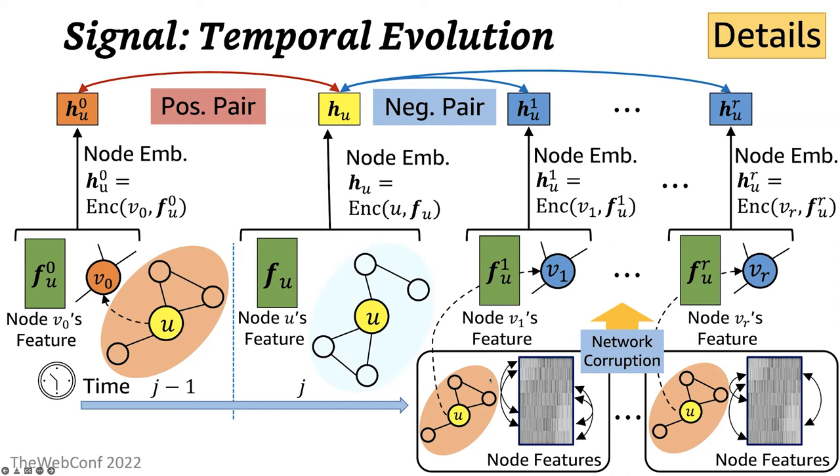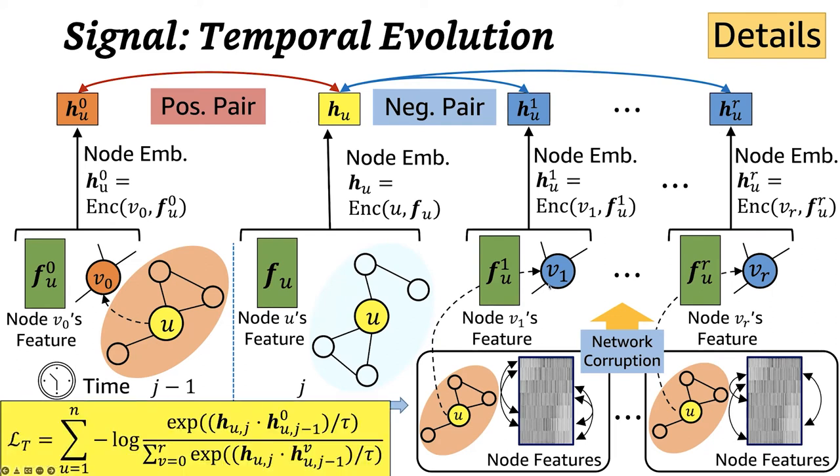Then node embeddings from these corrupted networks, which correspond to the anchor node u, are taken as the negative samples of the anchor node. Again, once we have these positive and negative pairs, contrastive learning in consideration of temporal evolution can be performed using this loss function.